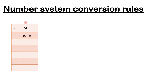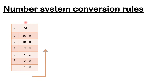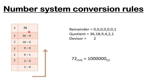After dividing 72 by 2, the result is 36 with remainder 0. Again dividing by 2 gives 18 remainder 0, then 9 remainder 0, then 4 remainder 1, then 2 remainder 0, then 1 remainder 0. When writing the answer, be careful — you must write the remainders from bottom to top (downward to upward). If you reverse the direction, the answer will be wrong.